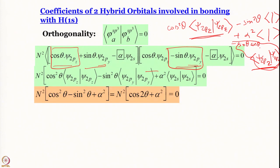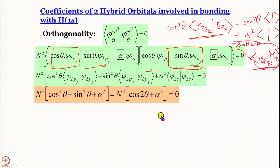The orthogonality relation simplifies to n²(cos²θ − sin²θ + α²) = n²(cos2θ + α²) = 0. Since n cannot be zero, we equate cos2θ + α² = 0, where 2θ = 104.5°.